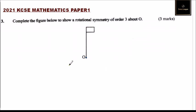It means you draw the diagrams which can fit onto this one three times. So from 360 degrees we divide by three, you get 120 degrees.